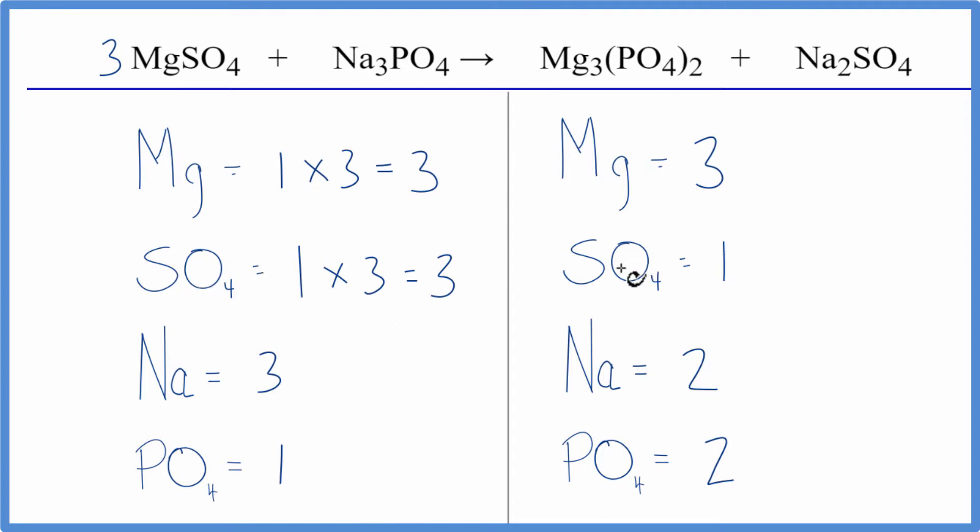Let's balance the sulfates next and see what happens with the sodium. We have three here and one here. We'll put a three in front of the sodium sulfate, so one sulfate times three. Now the sulfates are balanced. But we have two times three for the sodiums, which gives us six of those.